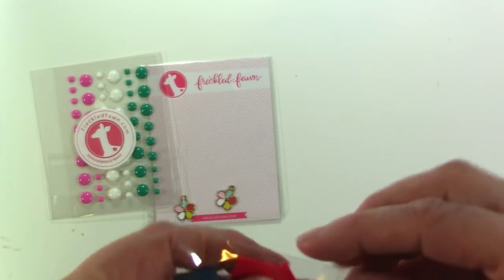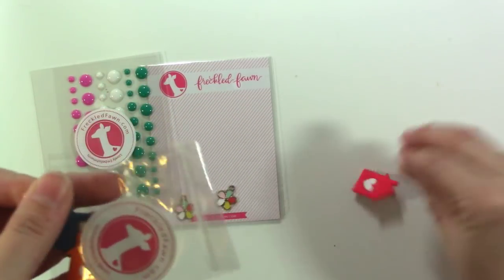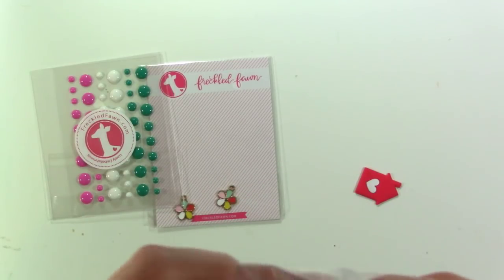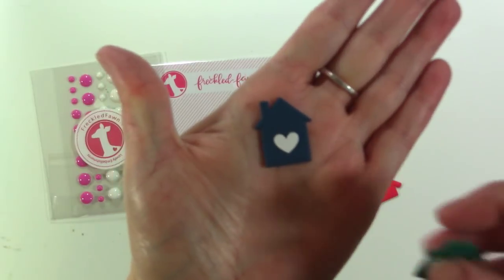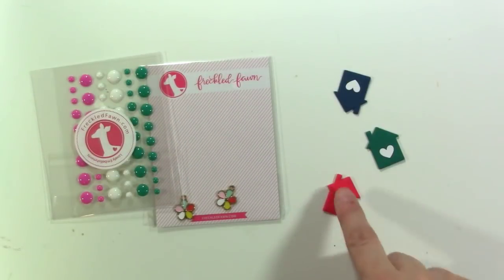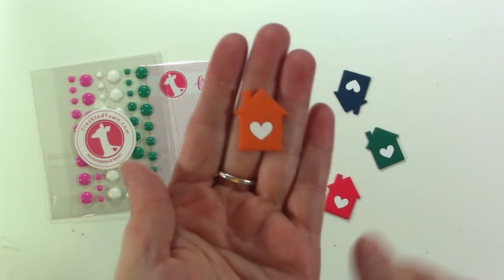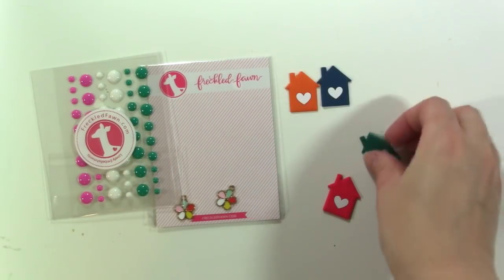We have these cute little rubber houses and I'll pull them out. They have hearts on them. We've got a dark blue, a green, a red and this is kind of like a pinky red. I wouldn't call it really a dark red or anything. And then an orange. So those are again adorable, right?